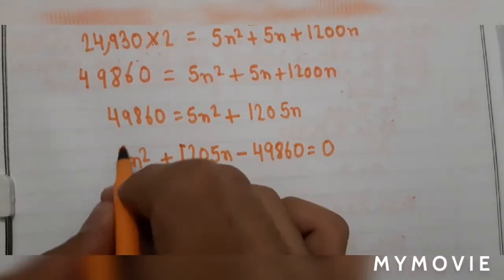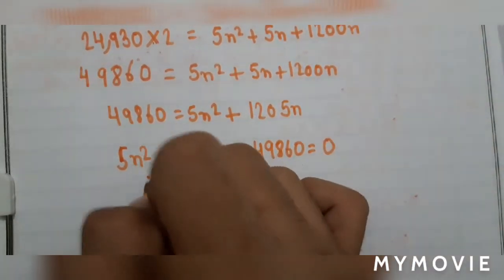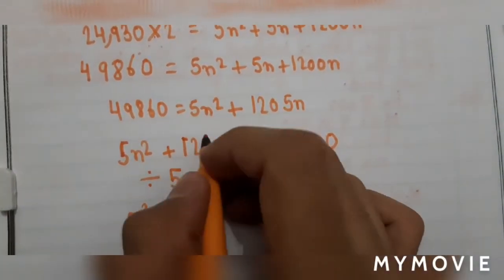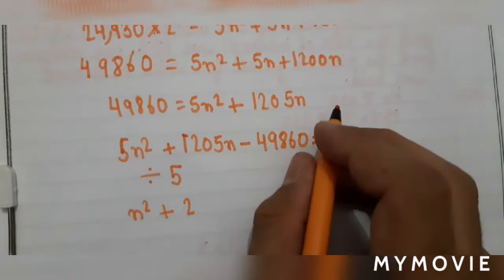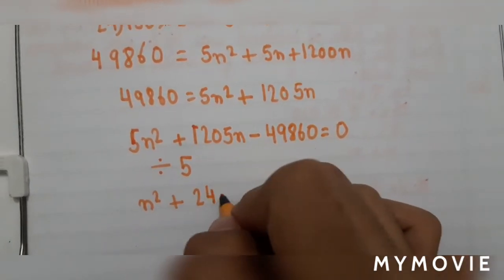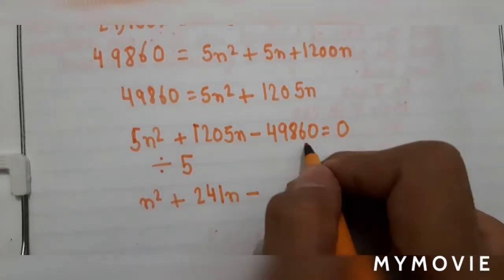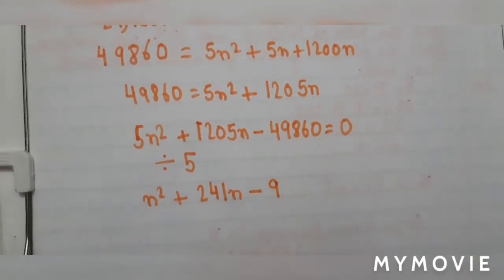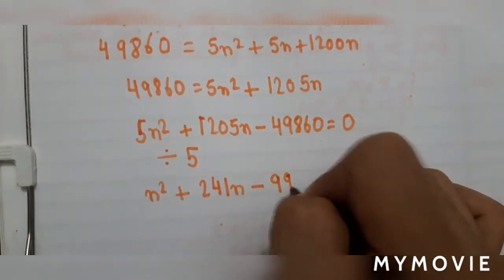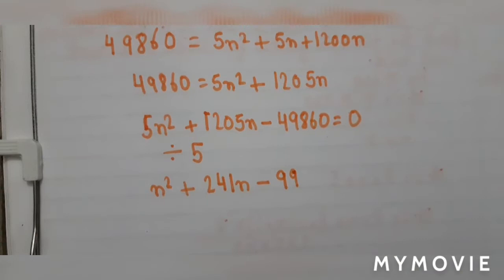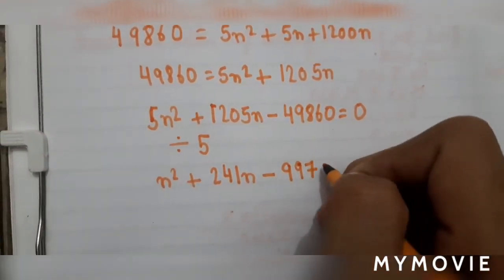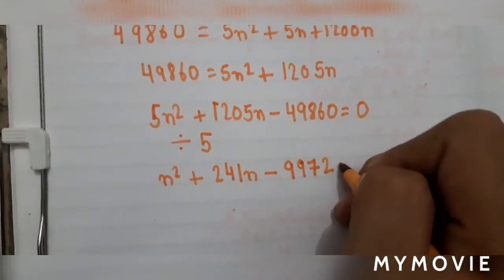This whole expression is divisible by 5, so divide everything by 5. Dividing by 5 gives: n squared plus 241n minus 9972 equals 0.